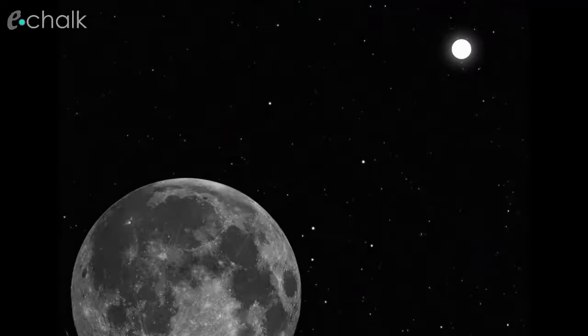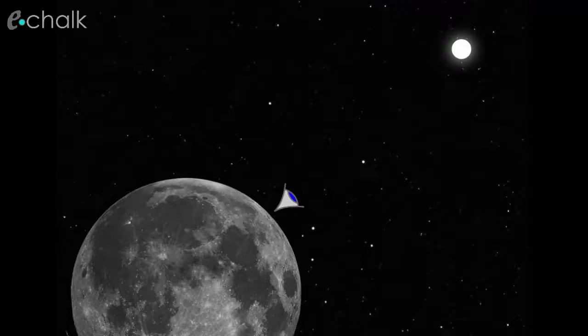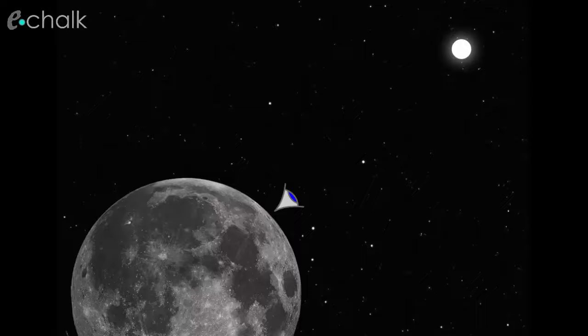Consider an observer on the moon looking directly at the sun. That's what this eye represents. Since light travels in straight lines through a vacuum, and the sun is emitting all the colors of the visible spectrum, the observer perceives this as white light. So he sees the sun as a bright white glowing ball in the sky.